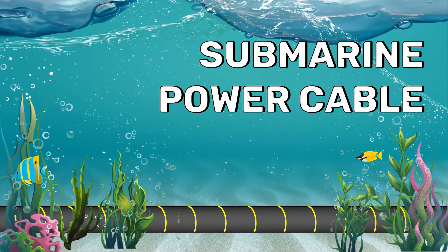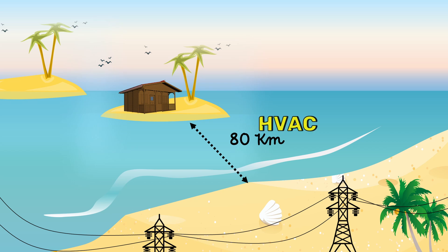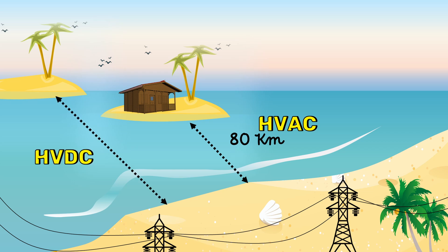In submarine power cables, for a route of less than 80 km, high-voltage AC submarine power cables would be the most economical system. However, beyond this length, high-voltage DC submarine power cables are used.